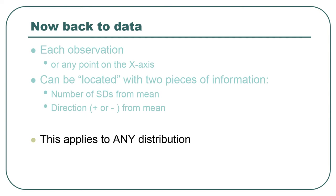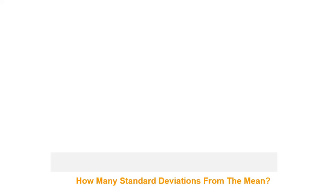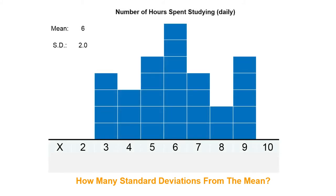Z-scores can be used with any distribution. However, we especially like them with normal distributions because they gain an extra, somewhat magical property — mathemagical. So let's do this example. You can pause and see if you've worked out the answers. This distribution has a mean of six and a standard deviation of two.